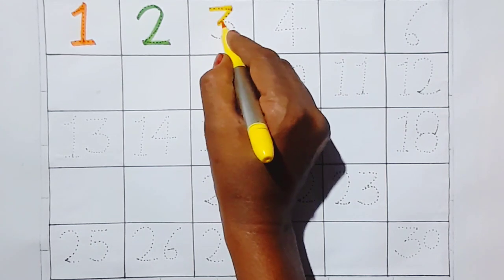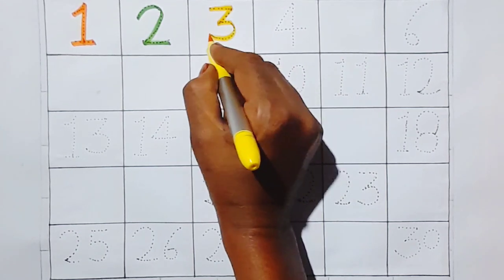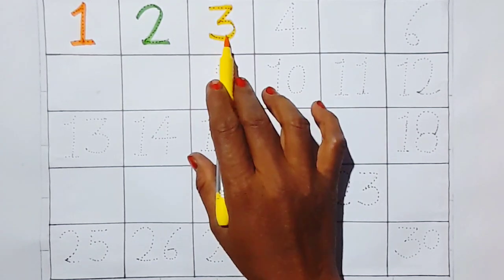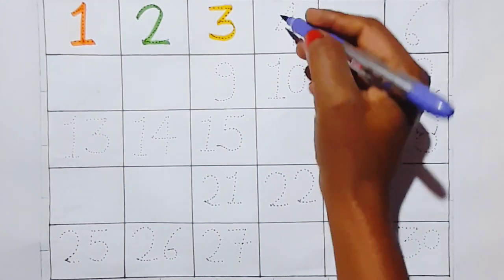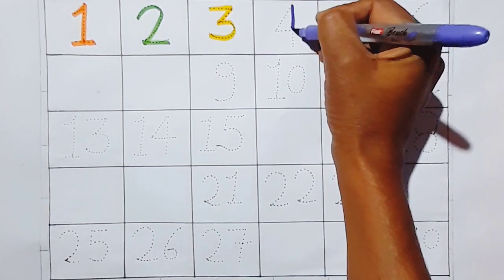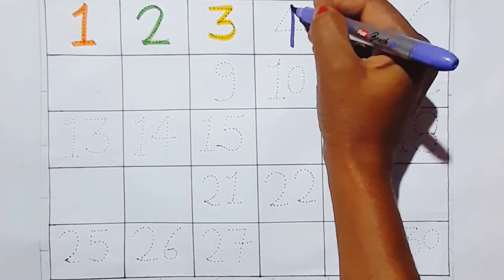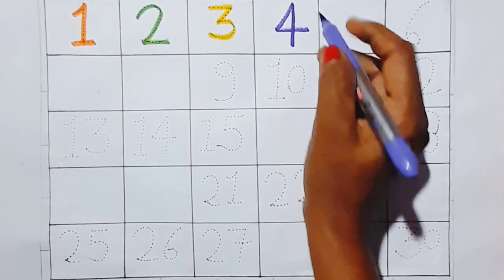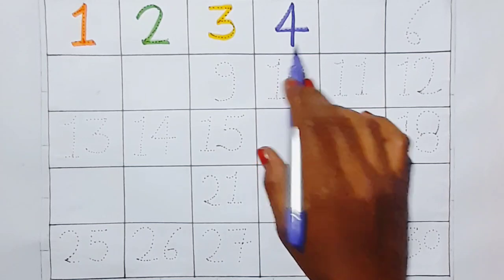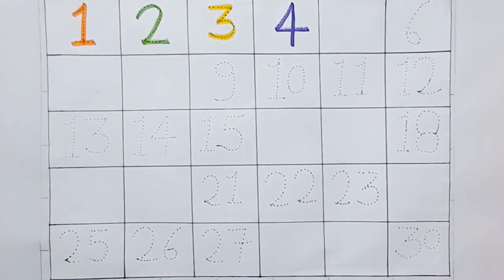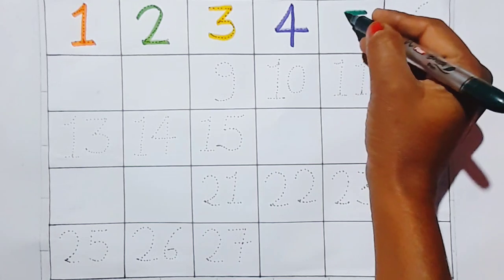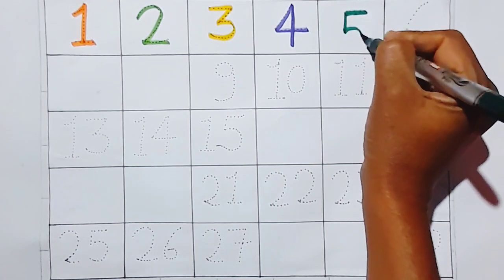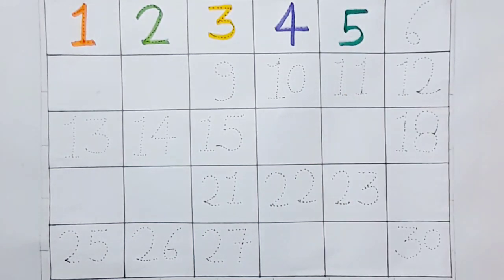Yellow color. Three — this is three. Four — this is four. Dark green color. Five — this is five.